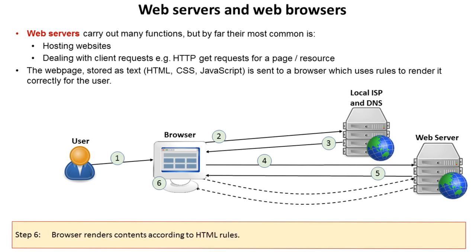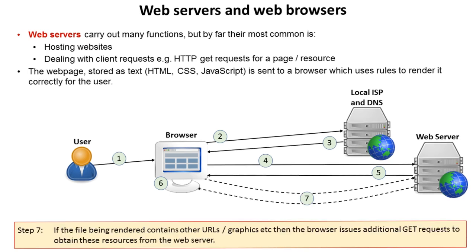The browser now renders — effectively draws — the contents according to HTML rules. But it doesn't stop there. It's highly unlikely that a modern web page will just have static text; it probably has images, movies, links to embedded videos possibly from YouTube, sounds, and other assets. If the file being rendered contains other URLs or graphics, the browser issues additional GET requests to obtain these resources, they get returned and placed in the correct position, and you get an entire web page.